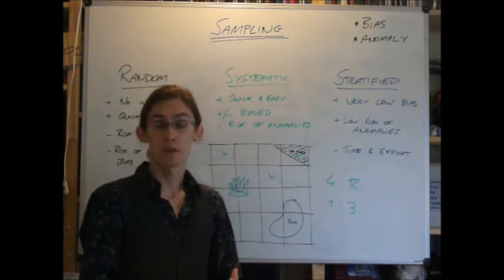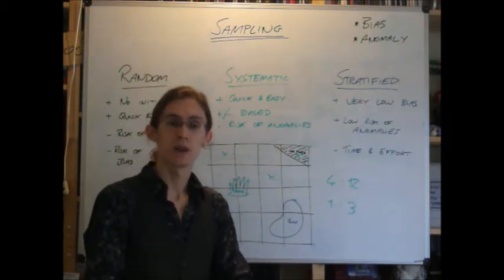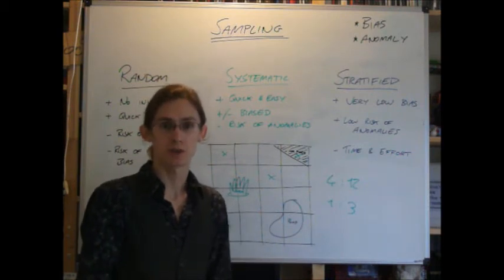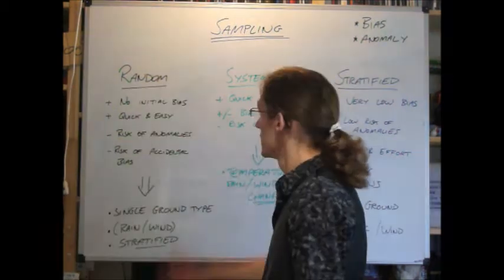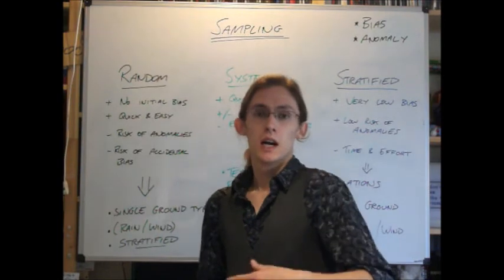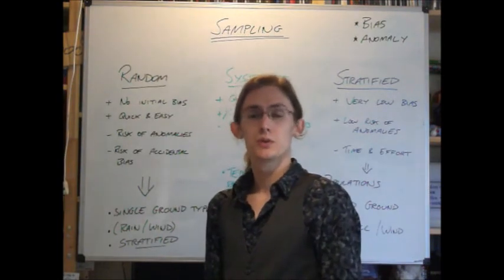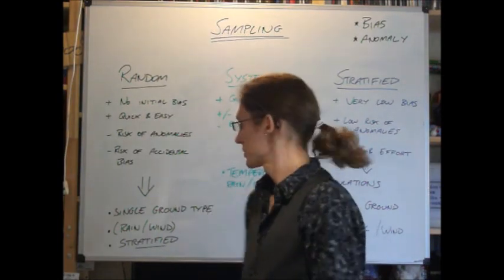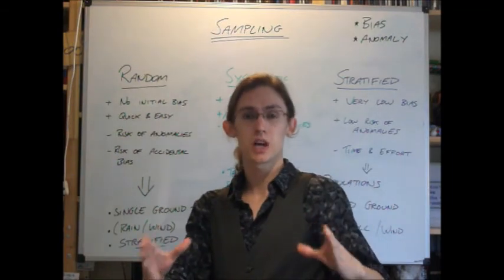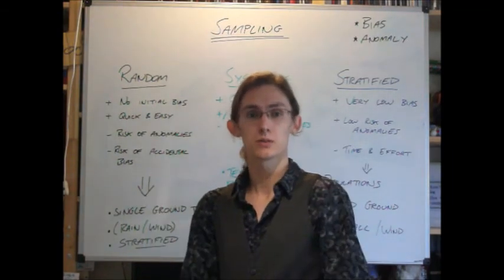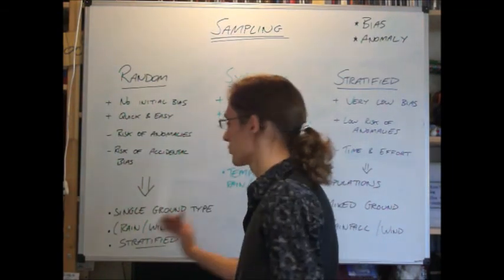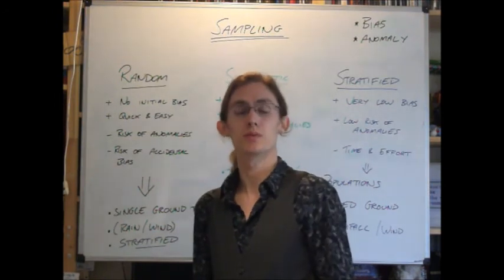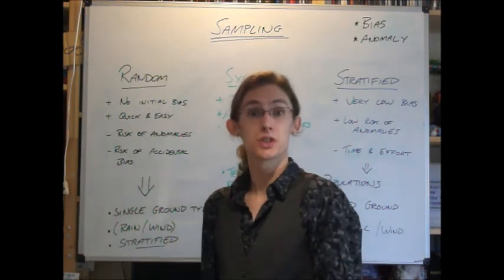So what are the best ways to then use these sampling strategies? Random sample is a little difficult to use, because it tends to add in a lot of bias. However, if you've got a single type of ground, so if it's just a field with no features in it, random sample is great. No problems, because you don't have to take anything else into account.